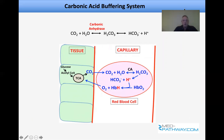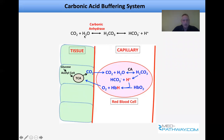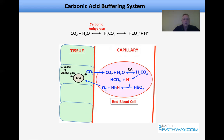The most important buffering system in the body is the carbonic acid system. CO₂ and water combine to form carbonic acid, catalyzed by carbonic anhydrase, and then dissociate into bicarbonate and protons. By Le Chatelier's principle, more CO₂ pushes the equilibrium right, generating more protons — so CO₂ is acidic. There's a relevant passage on altitude sickness and carbonic anhydrase inhibitors; the drug prescribed is Diamox (acetazolamide).